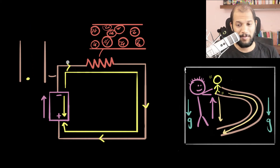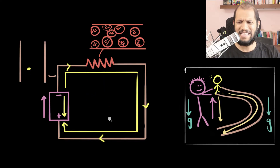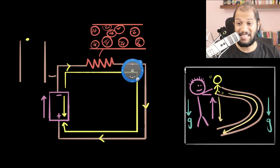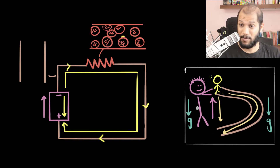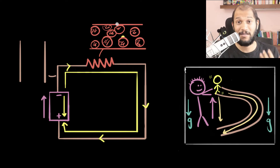That poses a problem. If the electrons are being pushed with the same force in the wire and in the resistor, then that force in the wire would accelerate and speed up the electrons. So in the wires, the electrons would be moving very fast — very high current — but inside the resistor, very slowly, very low current. That can't happen because the current everywhere in the wire must stay the same. So how do you make sure the current here and the current here is exactly the same?